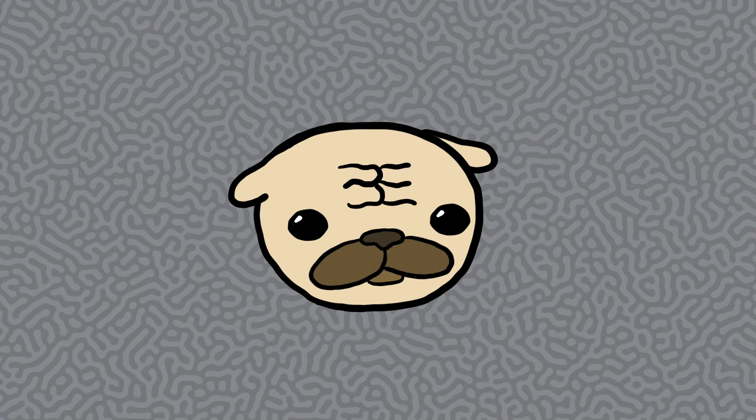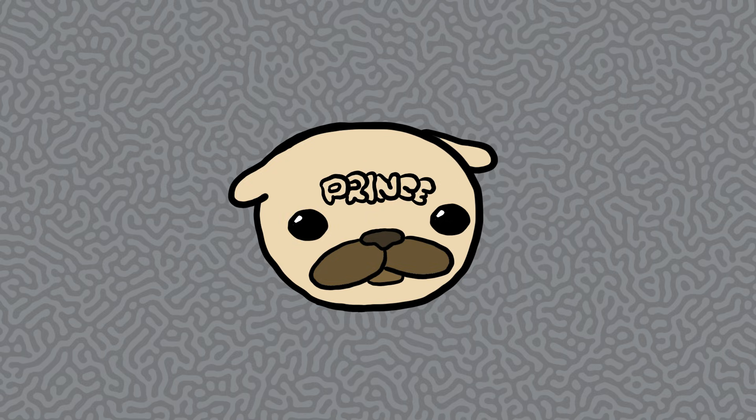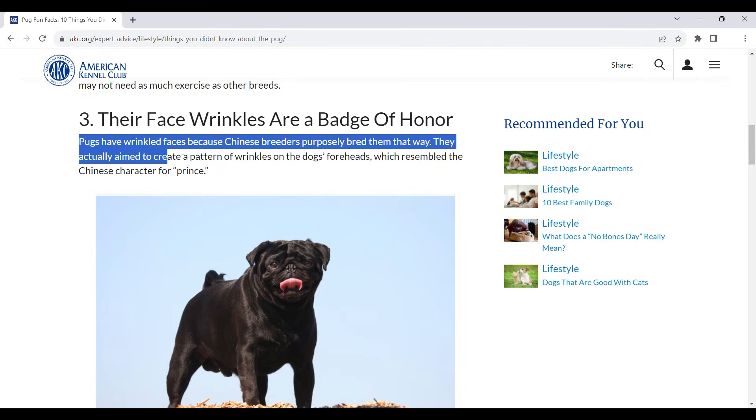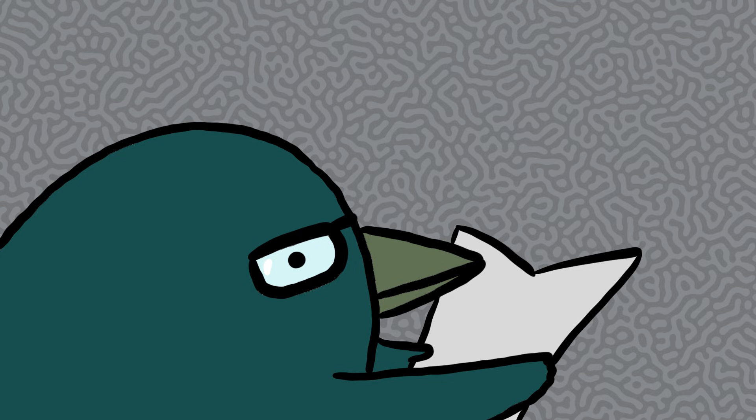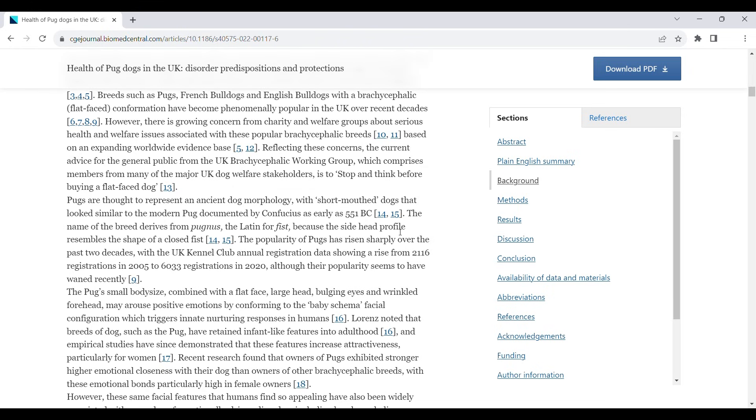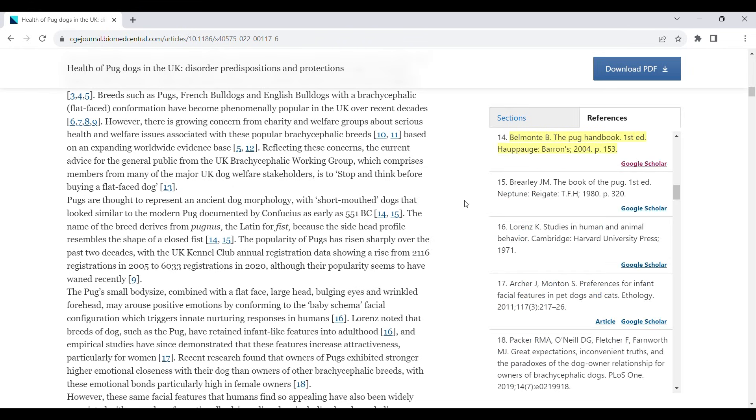So, according to urban legend, pugs have wrinkles because in ancient China royalty bred them to have the character for prince on their foreheads. This tale is all over the internet and even in some peer-reviewed papers about pugs, but if you follow their citations you'll find that instead of citing primary sources...